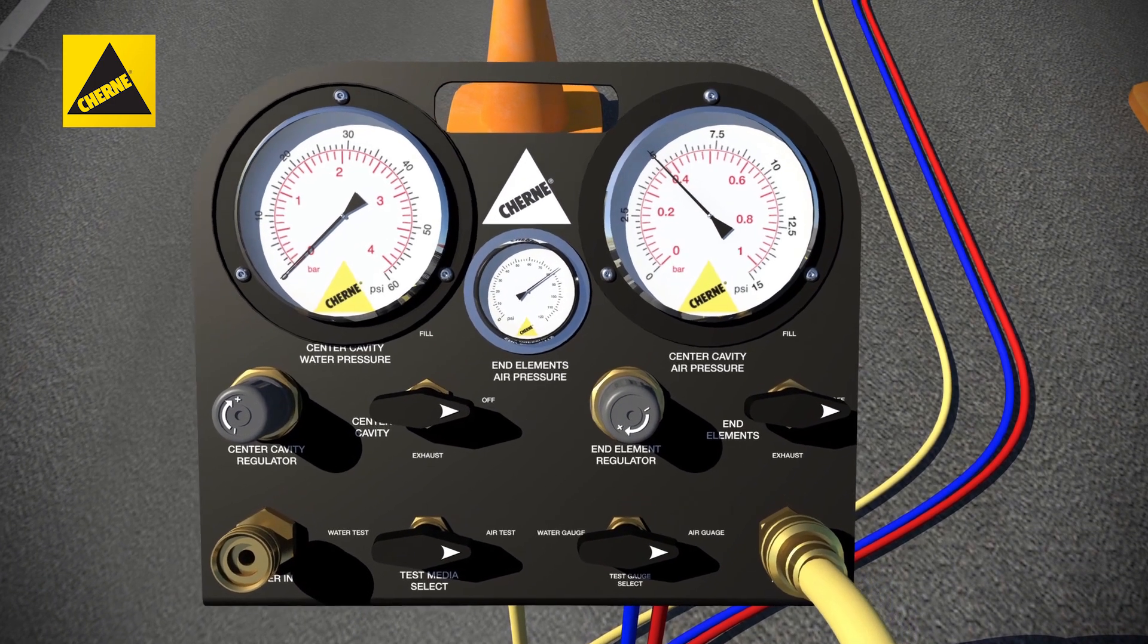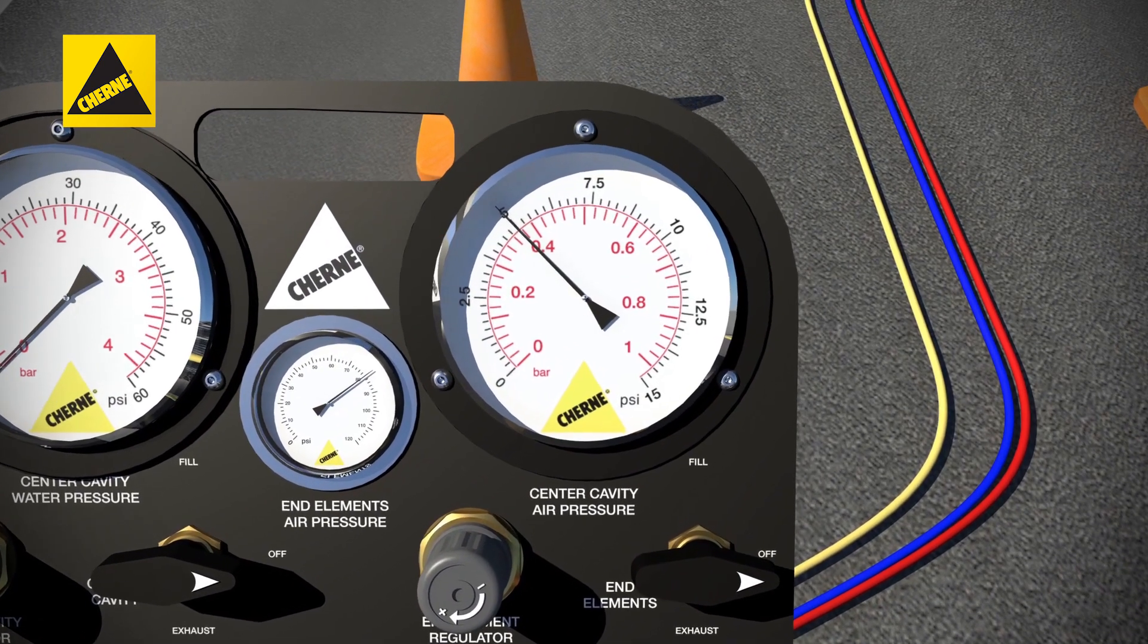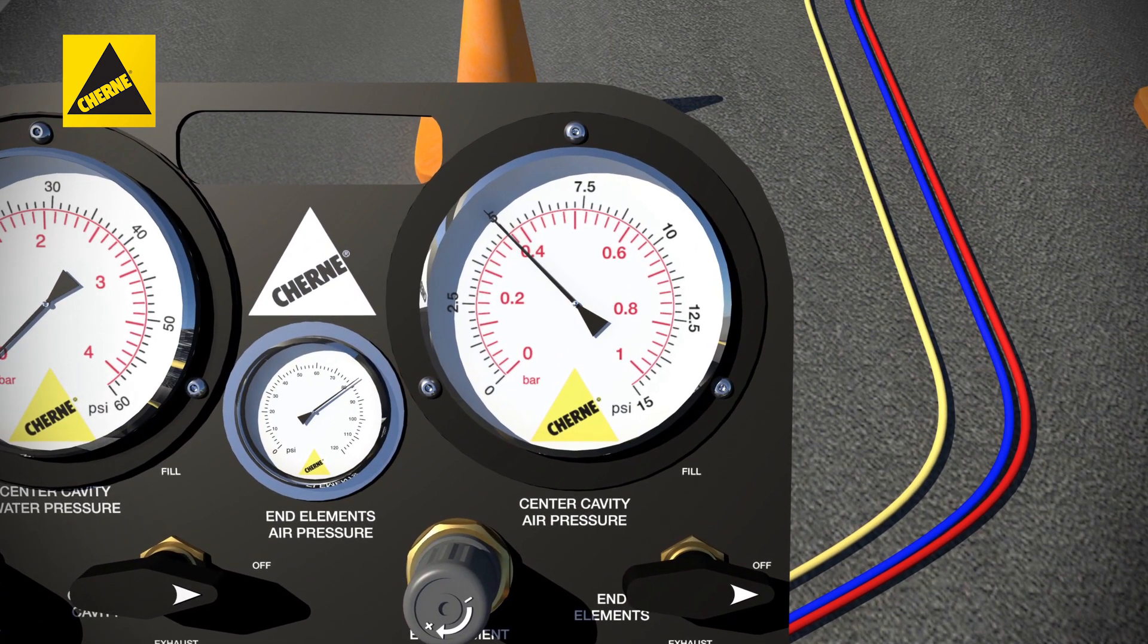Monitor the test pressure gauge to determine the amount of time it takes to drop psi. If the joint holds its pressure for the specified amount of time, it passes. If there is a loss of air pressure in excess of 1 psi during the required test period, future repair will be necessary.